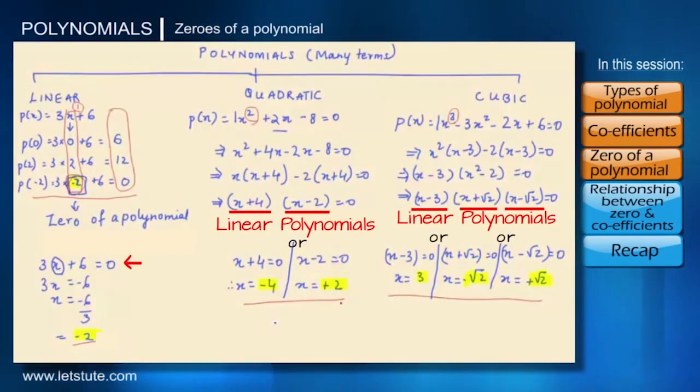So suppose instead of minus 4 and 2, the zeros of this quadratic polynomial were minus 4 and minus 4. We are just assuming. In that case,